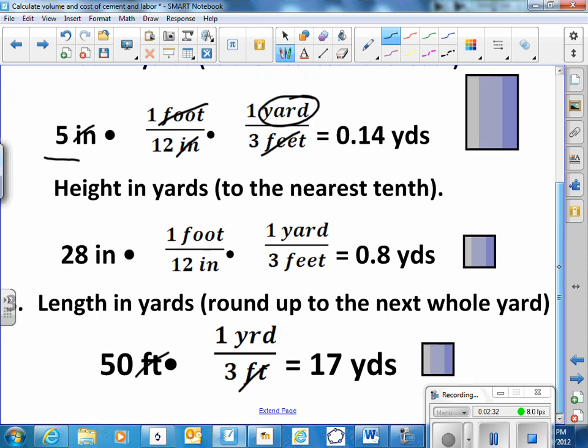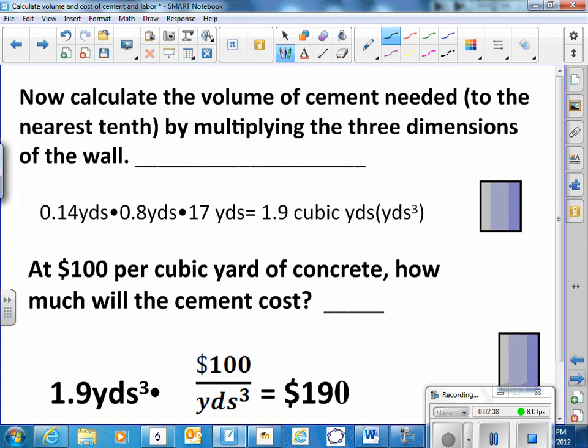So then I can multiply all three of those numbers and get cubic yards. .14 times .8 times 17 gives me 1.9 cubic yards, yards cubed.